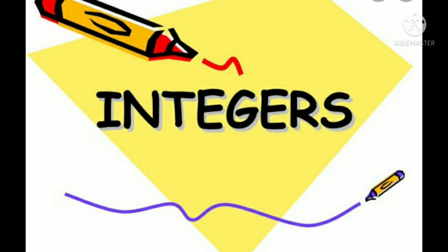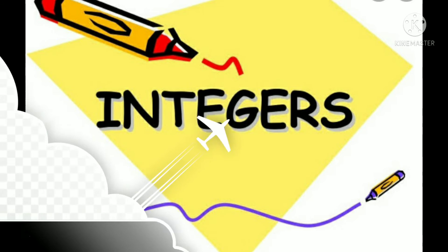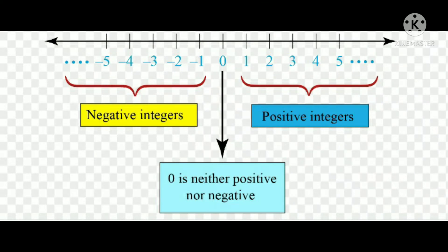In this video we are going to learn about integers. The numbers 1, 2, 3, 4, 5, etc. are known as positive integers. The numbers minus 1, minus 2, minus 3, etc. are known as negative integers.